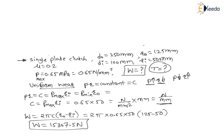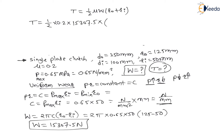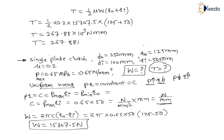The second part is to find torque. As per uniform wear theory, torque transmitted = ½ × μ × W × (Ro + Ri). This formula is for a single plate clutch. Substituting: T = ½ × 0.2 × 15307.5 × (125 + 50) = 267.88 × 10³ N·mm, which equals 267.88 N·m.